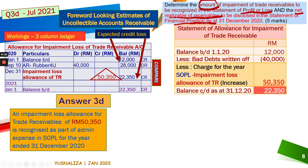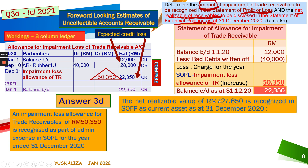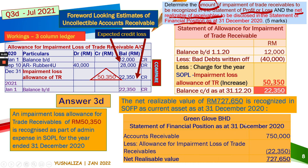You are also asked to determine the net realizable value of the receivable to be disclosed in the statement of financial position, which is 727,650, recognized as a current asset as at 31st December 2020. The statement of financial position extract shows trade receivables of 750,000 reduced by the allowance for impairment loss of 22,350, giving a net realizable value of 727,650.